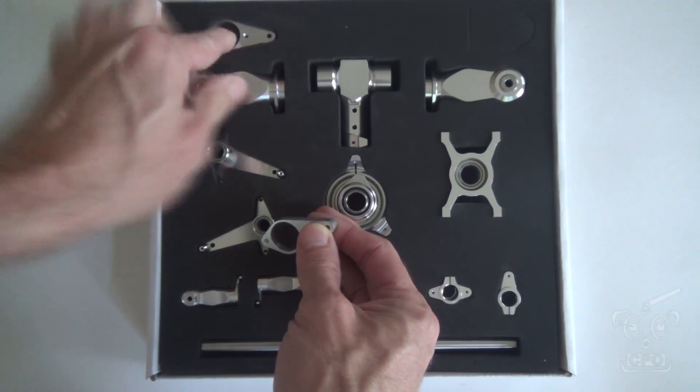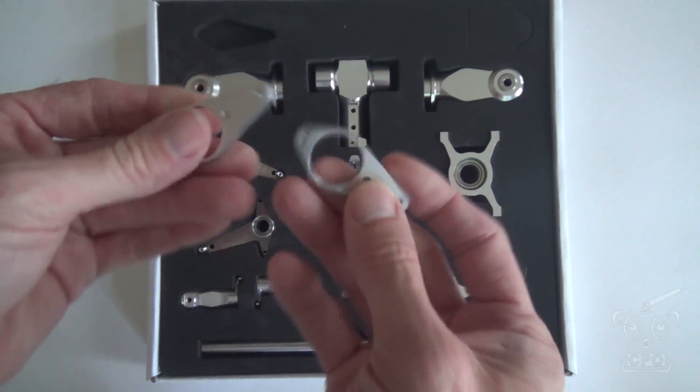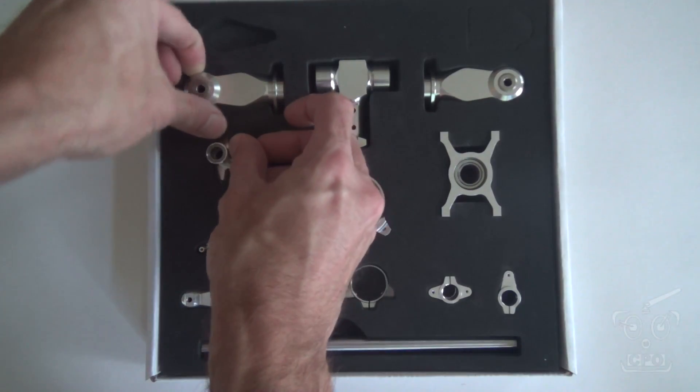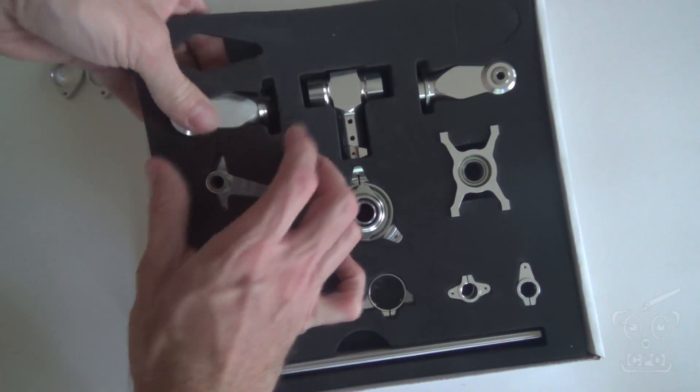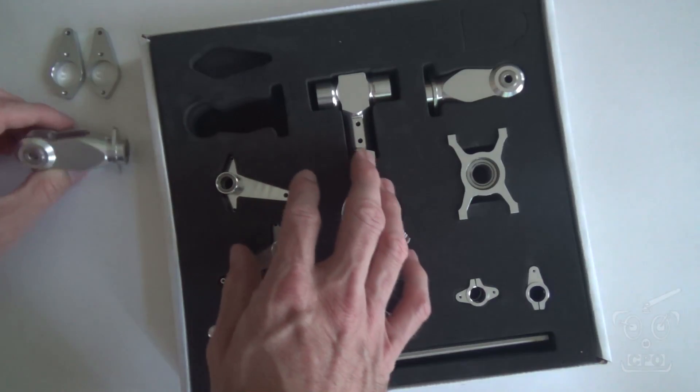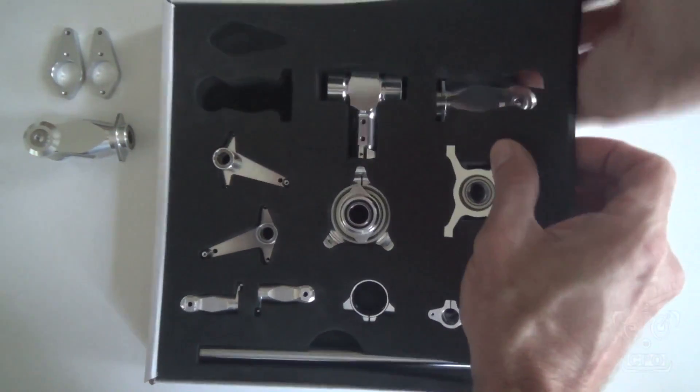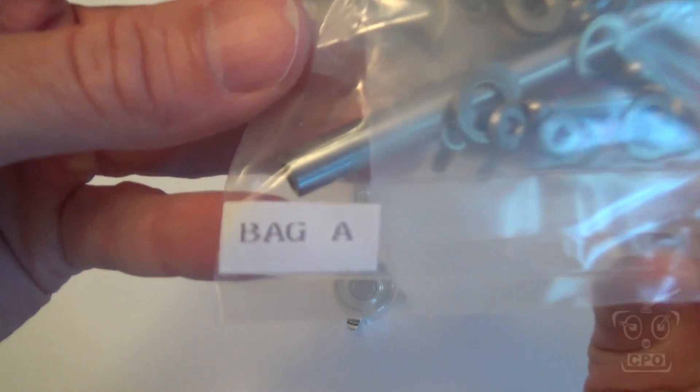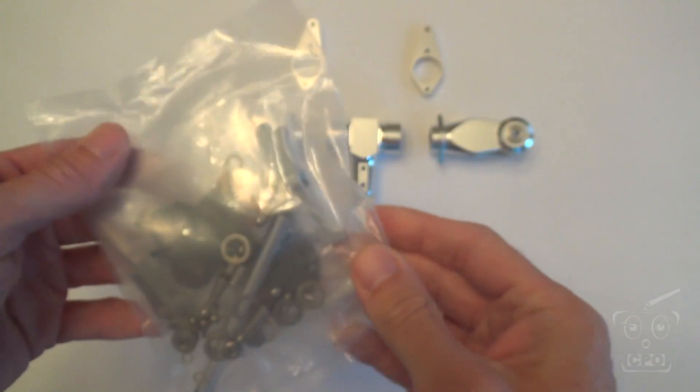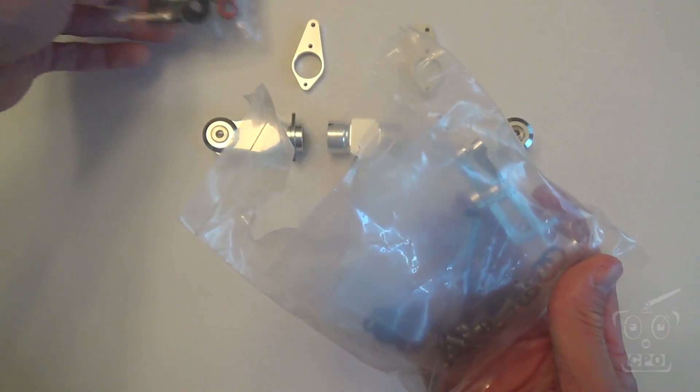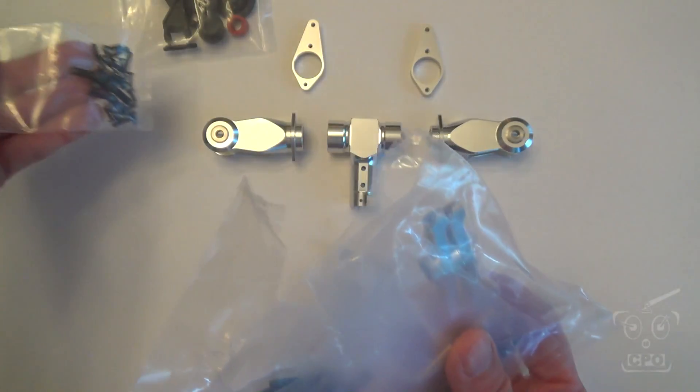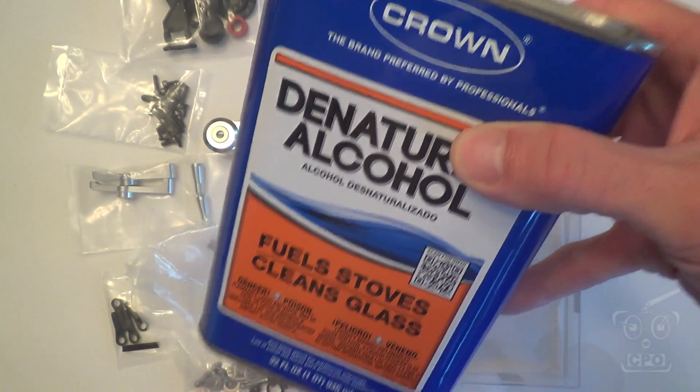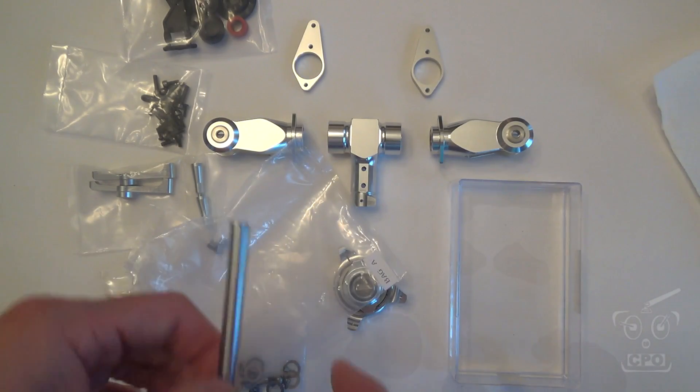Hey there, CPO here and this is the first actual build video for the Raptor E700. We're going to start with the head and work our way through the manual. This first video starts with the head and we're going to pull out bag A which contains pretty much everything you need for this head assembly. Really what I'm working on is page six and page seven in the manual.